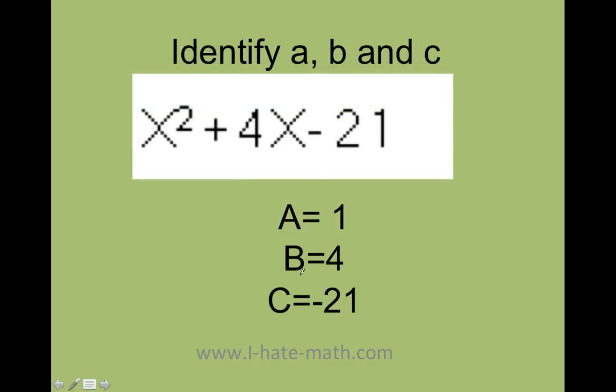But first I need to identify who is A, B, and C. A will always be the value next to the x squared. B will always be the value next to the x. And C is going to be the value that basically has no x.